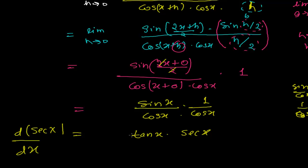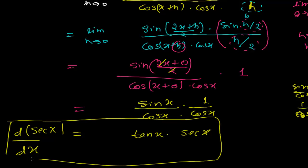So the derivative of sec(x) equals tan(x)·sec(x). Remember this formula — it is a really important formula in derivatives and we will use it a lot when solving trigonometric functions. In the next video we are left with the final trigonometric ratio, cos(x), and we are going to find the derivative of cos(x). I hope you'll be joining me in the next video. Bye-bye!